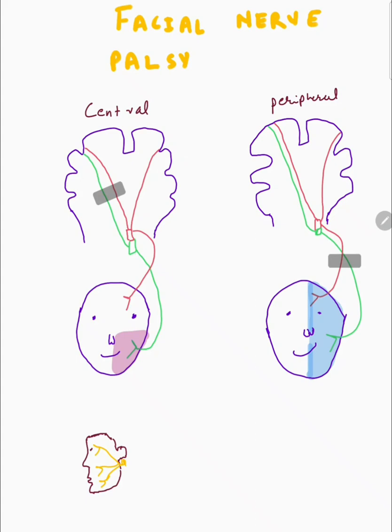The fibers for the upper face — the forehead — are supplied by both contralateral and ipsilateral fibers. Here, this is the ipsilateral and this is the contralateral supply to the upper face.